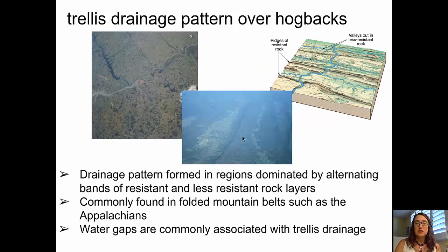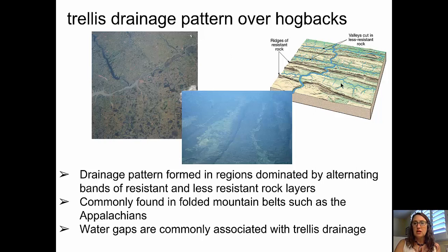Trellis drainage patterns form in regions dominated by alternating bands of resistant and less resistant rock layers, such as in a folded mountain belt area like the Appalachian Mountains. In this cartoon, parallel ridges run from left to right, and in the valleys between those ridges — and down the slopes — there are streams. Those streams are connected by one larger stream that flows through water gaps in the ridges.